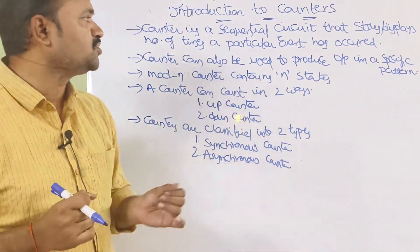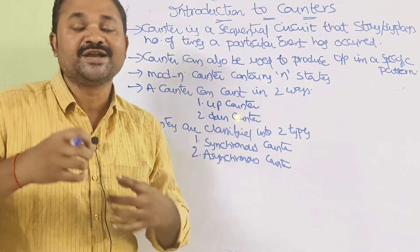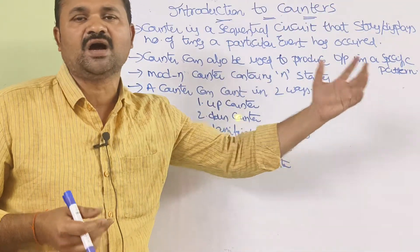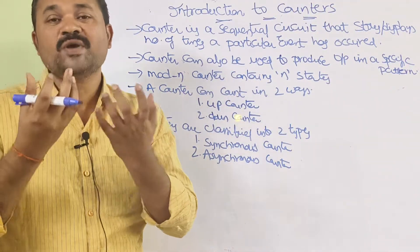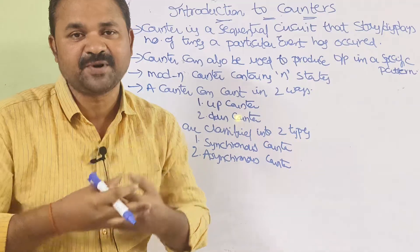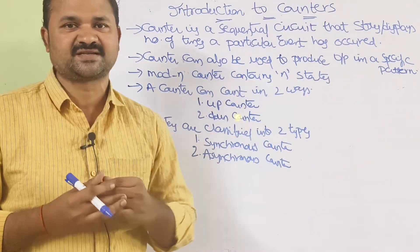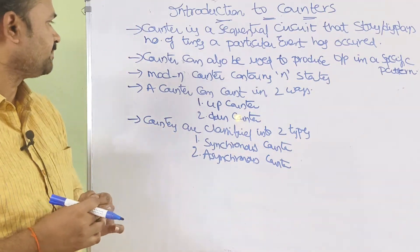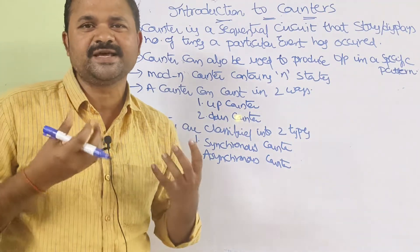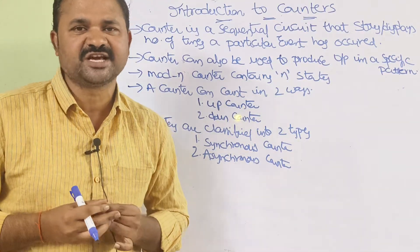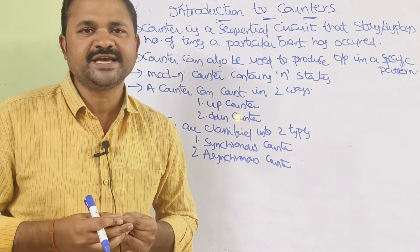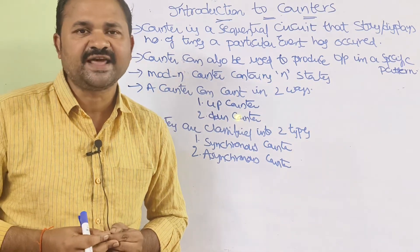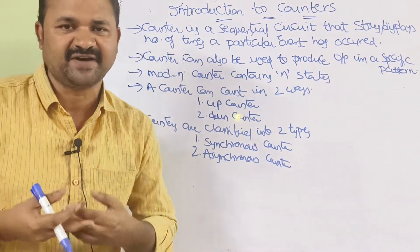By using a counter, we can count the number of clock pulses — we can store and display how many clock pulses it performs. A counter is just like a register. It is a sequential circuit — a collection of flip-flops connected in a cascading fashion, one by one.